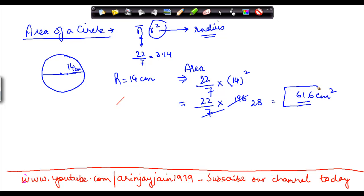616 centimeter squared. Once you do the calculations, you will also come down to this number. So the area of the circle can very easily be calculated by using this formula pi r squared.